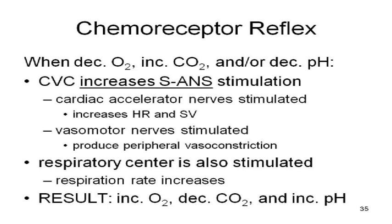If oxygen decreases, or carbon dioxide increases, or pH decreases — these three things usually happen together. When oxygen goes down, cells are metabolizing, using oxygen, and producing carbon dioxide. And if CO2 goes up, pH goes down. Any one or all three of these conditions can stimulate the cardiovascular response.